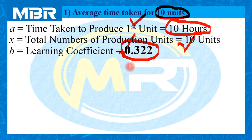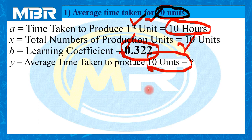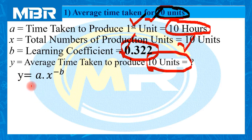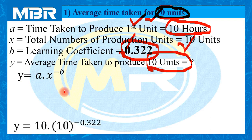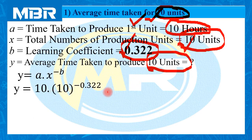Suppose in any case the value of the learning coefficient is not given — we need to know how to calculate it using the formula. Y is the average time taken to produce 10 units, since our calculation is based on 10 units only for question one. Let us insert the formula. The formula is y equals to A multiplied by x raised to minus B. Here A is 10, x is 10 units, and the learning coefficient is 0.322.